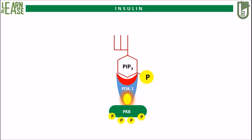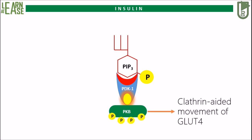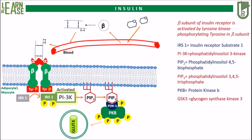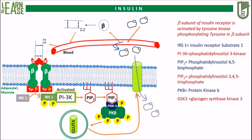Phosphorylated PKB will promote the clathrin-mediated movement of GLUT4. This will cause the secretory vesicles containing GLUT4 to migrate and fuse with the cell membrane, ultimately causing GLUT4 to get embedded in the cell membrane, by which glucose molecules from blood can enter into the target cell. In this way, all the excess glucose from blood will be localized into these target tissues and the glucose concentration in blood is reduced to normal levels.